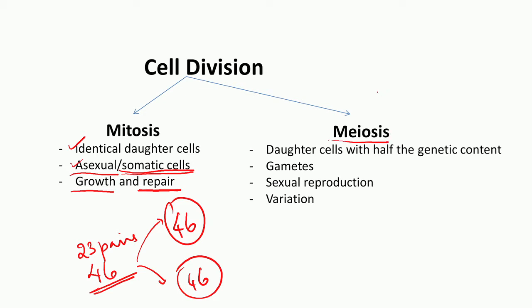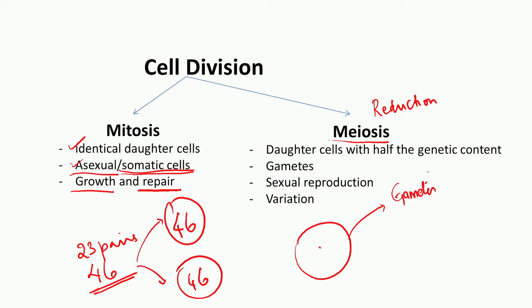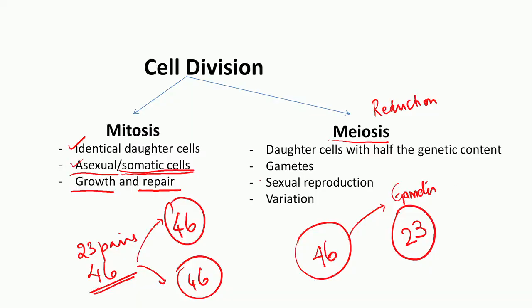In contrast, meiosis is different. Meiosis is again a form of cell division but it is also called a reduction division. In this process, when a cell undergoes meiosis, it gives rise to sex cells — also called gametes — with half the number of chromosomes. So if the germ cell starts with 46 chromosomes, after the end of meiosis it will give rise to an egg cell with only half that number. Meiosis has a crucial role not only in sexual reproduction but also in inducing genetic variations, and we will cover that in another video.